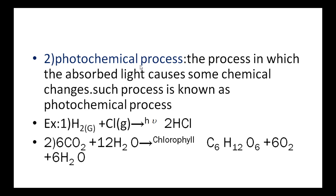The second type is photochemical process. The process in which the absorbed light causes some chemical changes is called a photochemical process. Examples: H₂ + Cl₂ gives 2HCl in the presence of light. Another example is carbohydrate synthesis: 6CO₂ + 12H₂O, in the presence of chlorophyll and sunlight, gives C₆H₁₂O₆ + 6O₂ + 6H₂O.